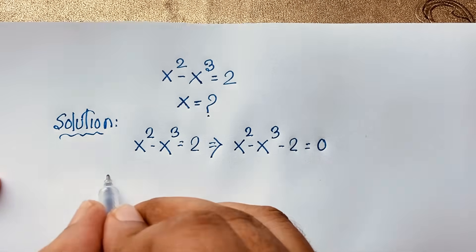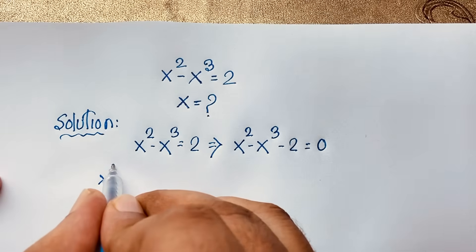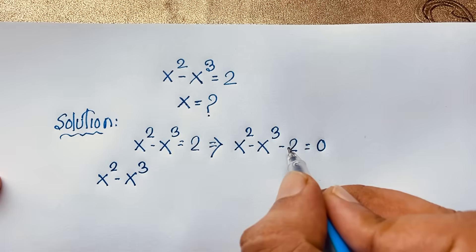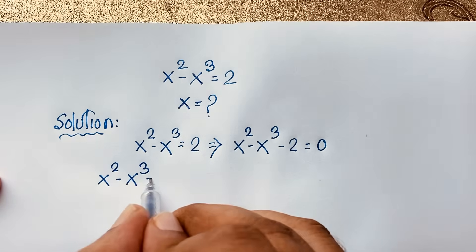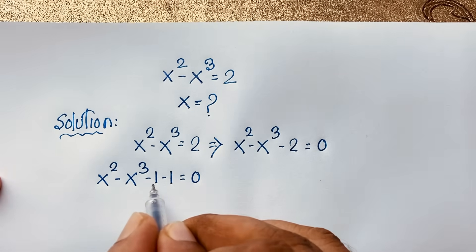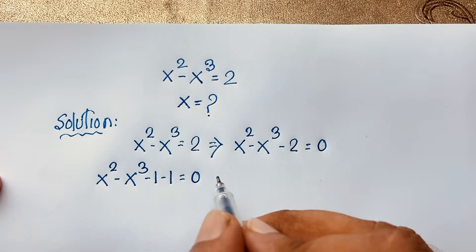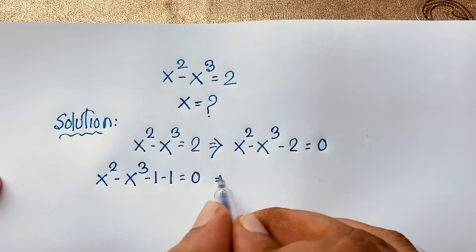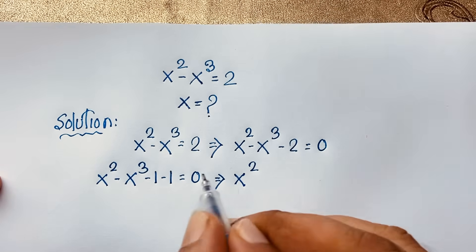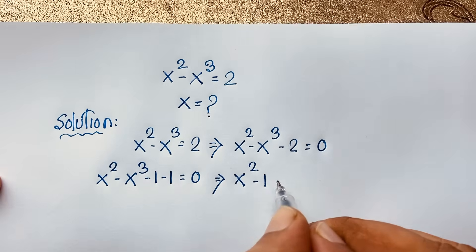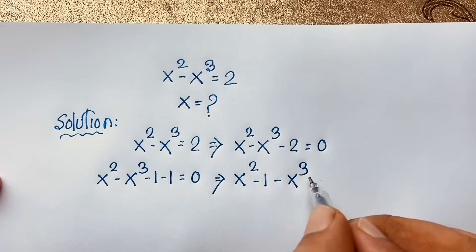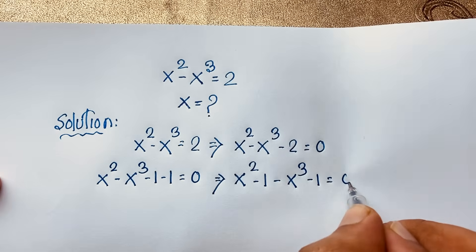Here, x squared minus x cubed, then this negative 2 — you can see that it will be minus 1 minus 1 is equal to 0. Minus 1 minus 1 gives negative 2. So this expression becomes: x squared, I take this negative 1 here, minus x cubed, then again I take this negative 1 here — it is equal to 0.